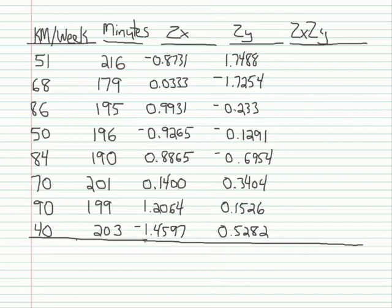Once you have the z-scores, it's very easy to obtain the correlation coefficient. The first thing you want to do is simply multiply the two z-scores. So I'm going to take negative 0.8731 and multiply it by 1.7488. And with that I get negative 1.5269.